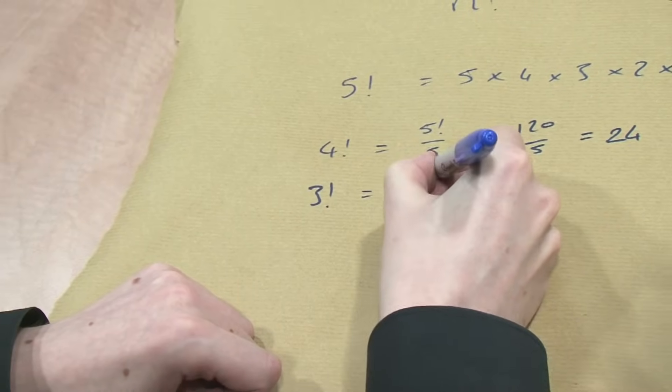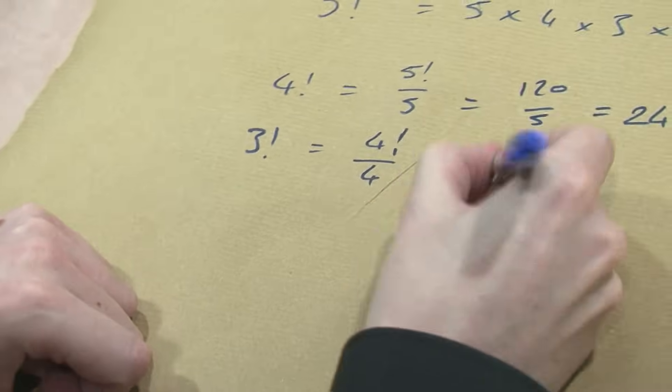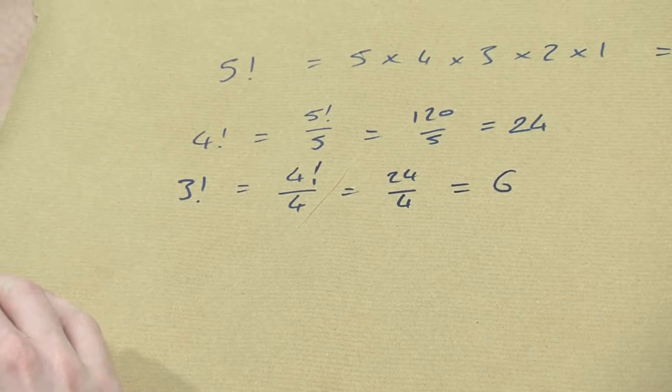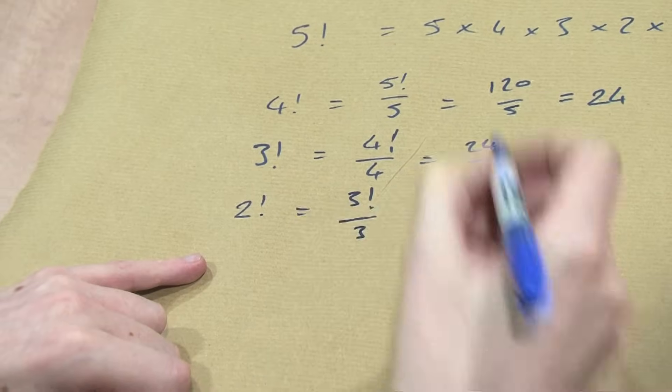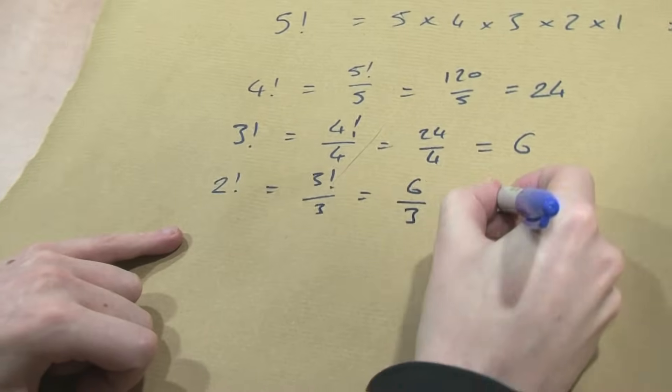3 factorial is going to be 4 factorial divided by 4. That's 24 divided by 4. That's 6. That's the answer to 3 factorial. 2 factorial, 3 factorial divided by 3. 6, which we've just worked out, divided by 3 equals 2.